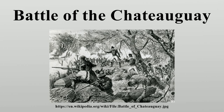De Salaberry reported five killed, 16 wounded and four missing, but three of the men returned as killed later rejoined the ranks unharmed, giving a revised Canadian loss of two killed, 16 wounded and four missing. The American losses were officially reported by Hampton's adjutant general as 23 killed, 33 wounded and 29 missing. De Salaberry reported that 16 American prisoners were taken.